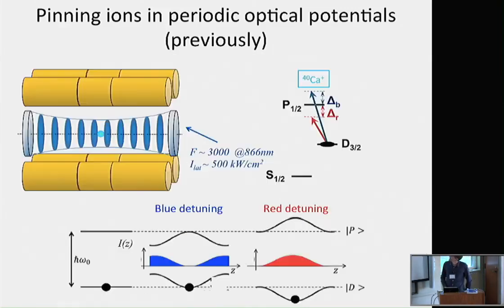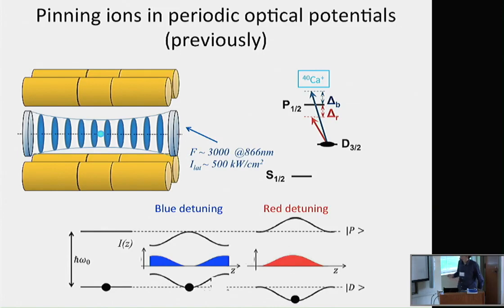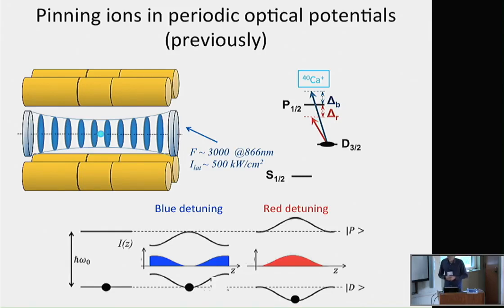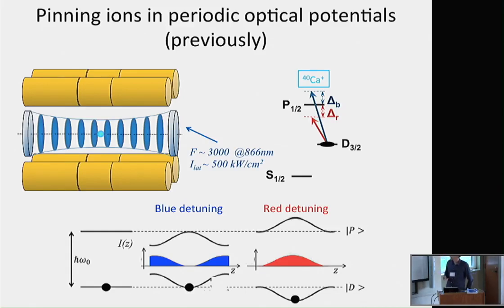In the first experiments we have this moderate-finesse cavity with a finesse of 3,000 at 866 nanometers, operating on the D3/2 to P1/2 transition in calcium. If we have an ion in this metastable D state and inject a field into the cavity tuned to the red or blue, we can have a strong optical potential up to 20–30 millikelvin deep. It can be blue or red detuned, meaning we can either pin the ion at intensity minima or intensity maxima respectively.